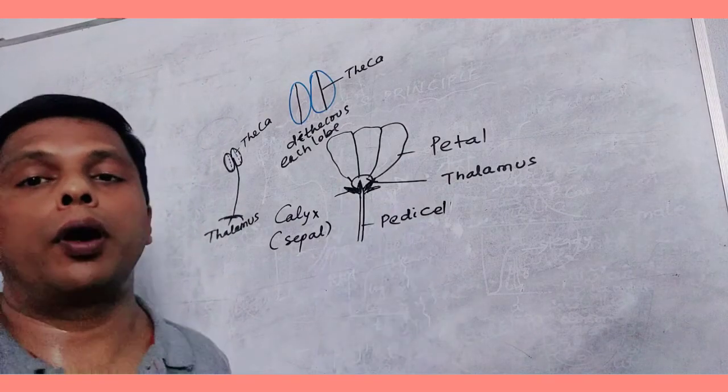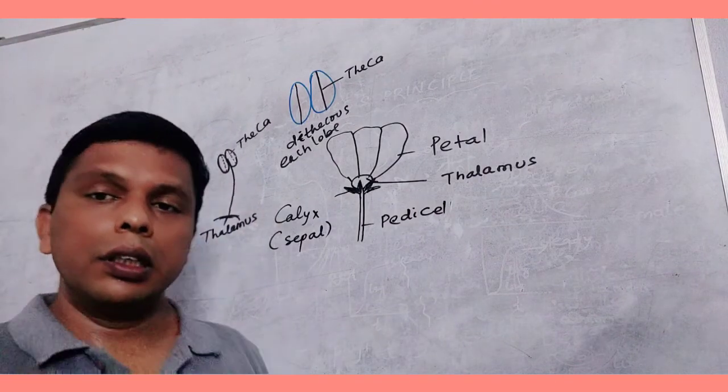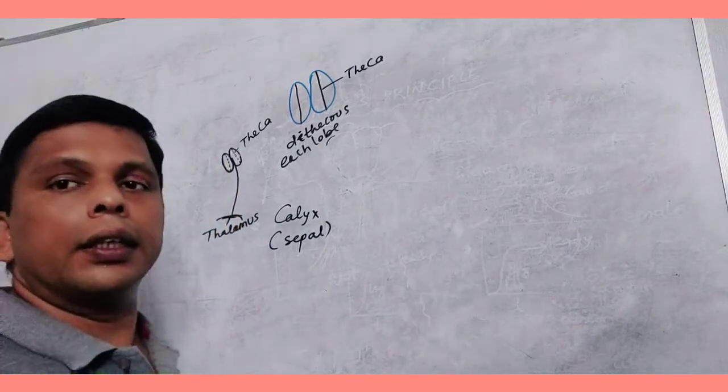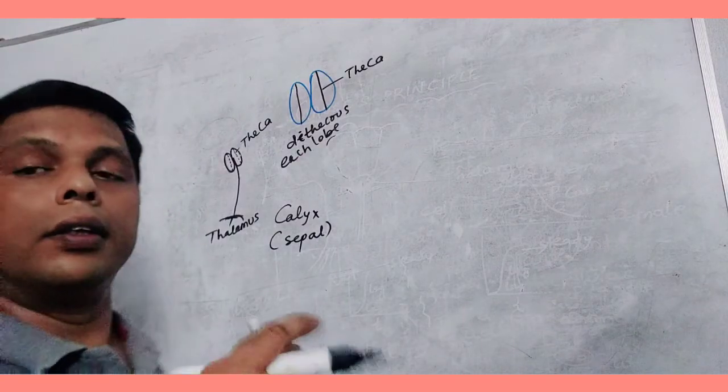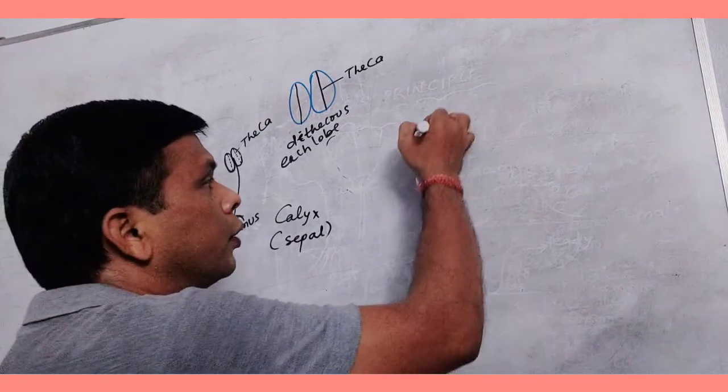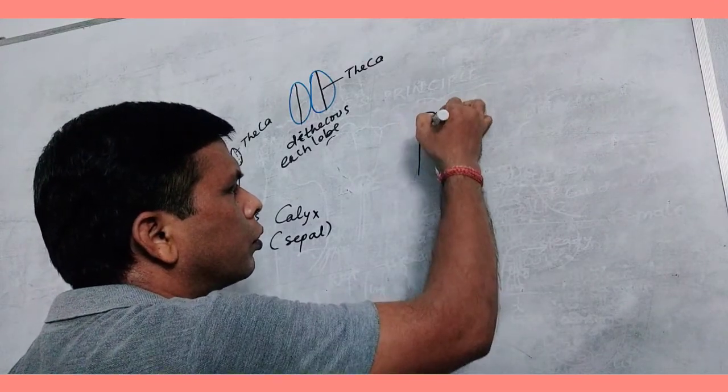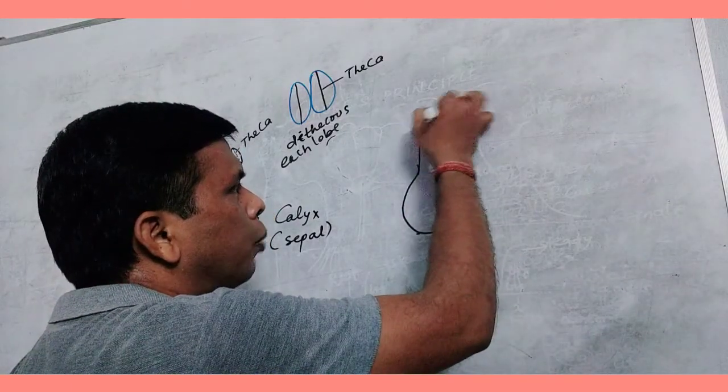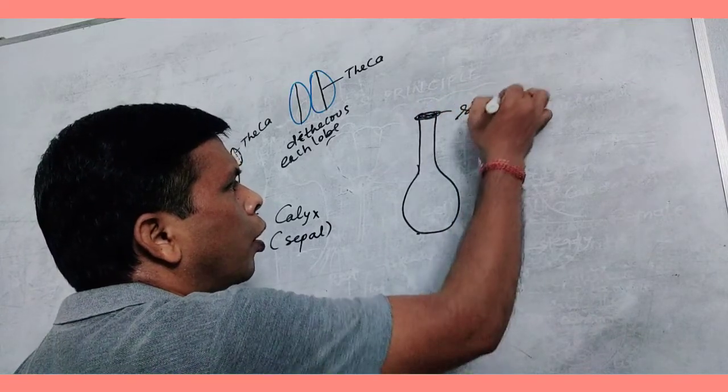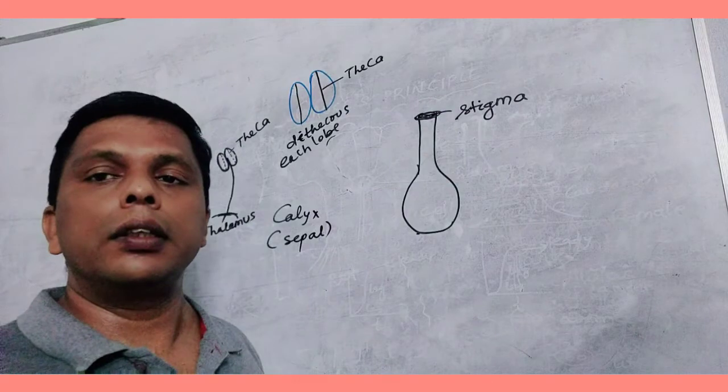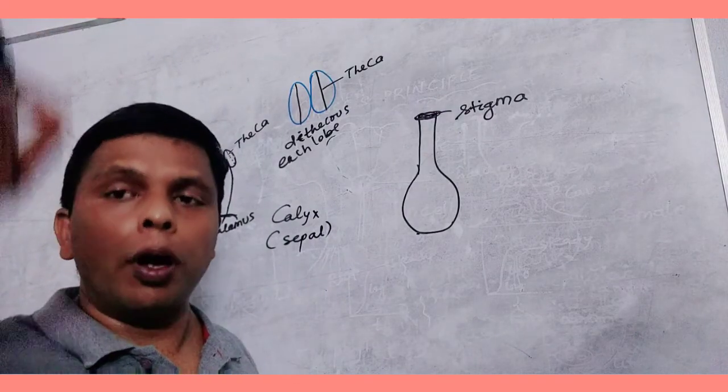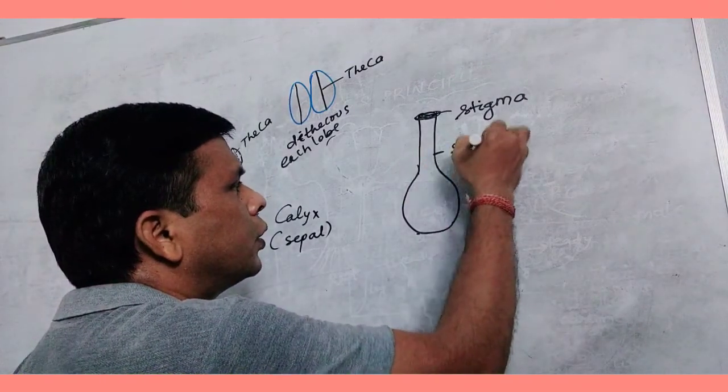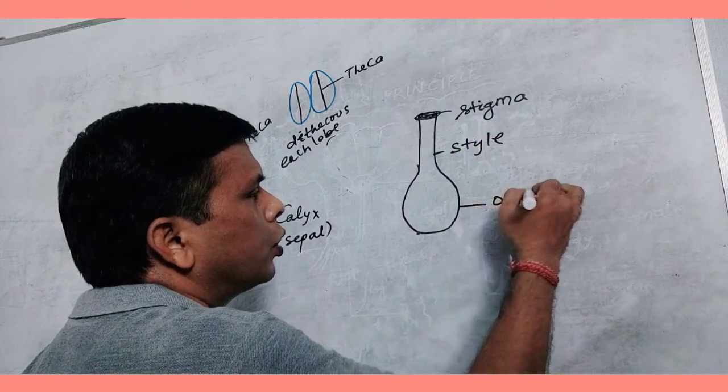Next come to the female reproductive unit, that is gynoecium. Like stamen, the individual unit of gynoecium is called carpel. What are the components of carpel? This part is stigma, which is sticky for receiving pollen grain. When pollen grains fall on it, it helps germination of pollen. This part is style and this part is ovary.